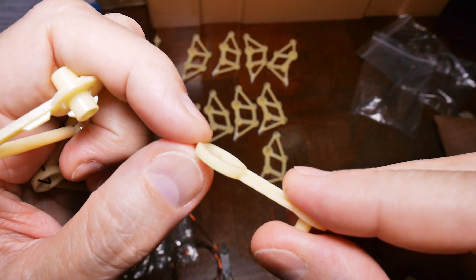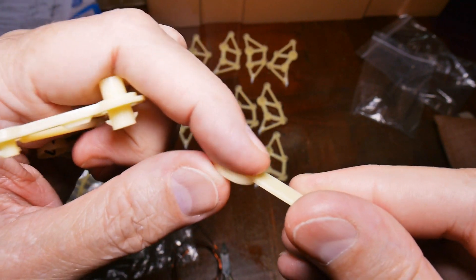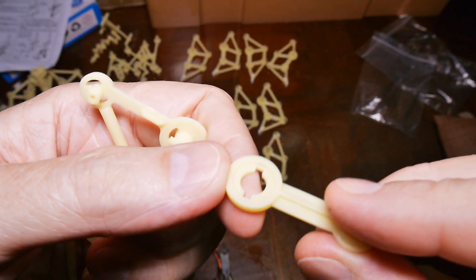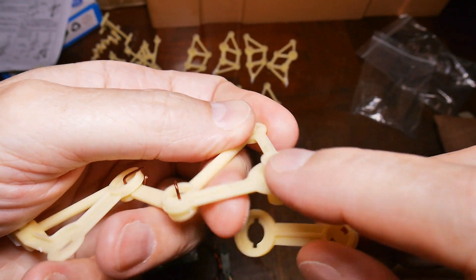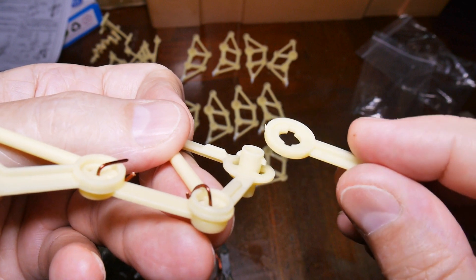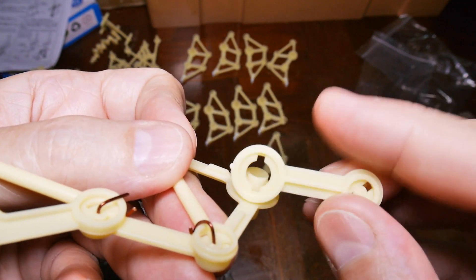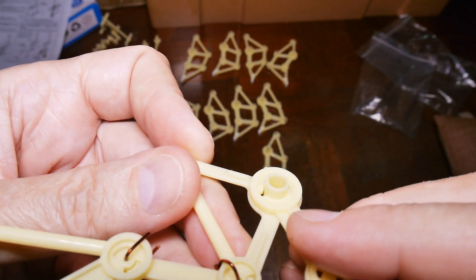Something to notice on these connecting rods. See this side? There's like a little depression in it. And this side is flat. The side with the depression is the side that goes here where these ears are. See the ears sticking out? So the side of the depression is the side that will go with the ears on it.